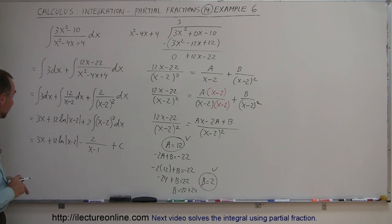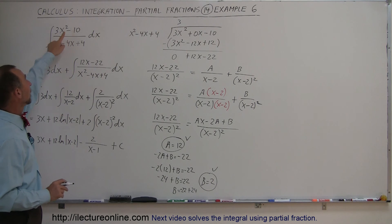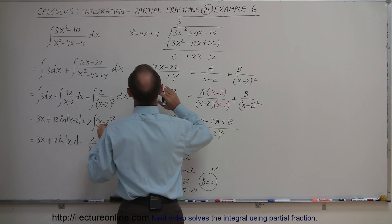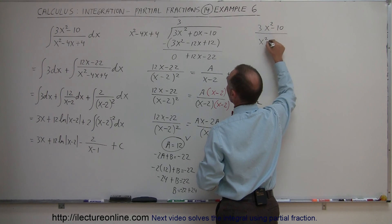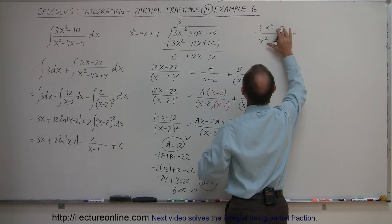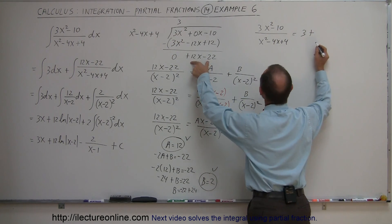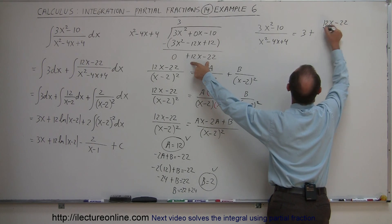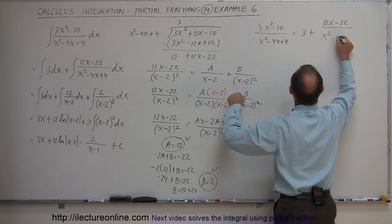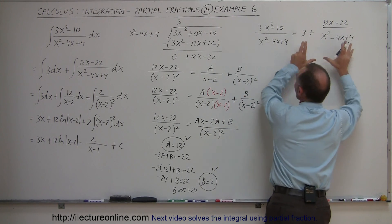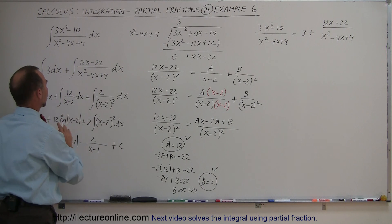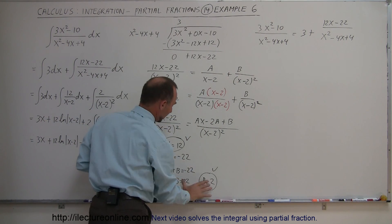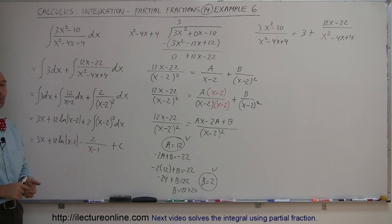At this point we're done — everything is integrated. Remember the two things we had to do: first, divide the numerator by the denominator — 3x squared minus 10 over x squared minus 4x plus 4 — to get 3 plus the remainder 12x minus 22 over x squared minus 4x plus 4. The first part is easy to integrate, but for the remainder we use partial fractions. We found A and B, and with those constants we could integrate all three terms.